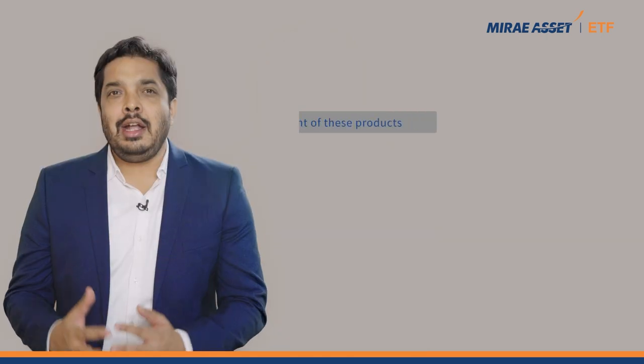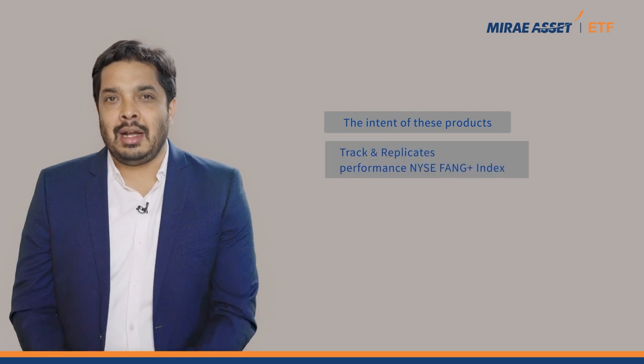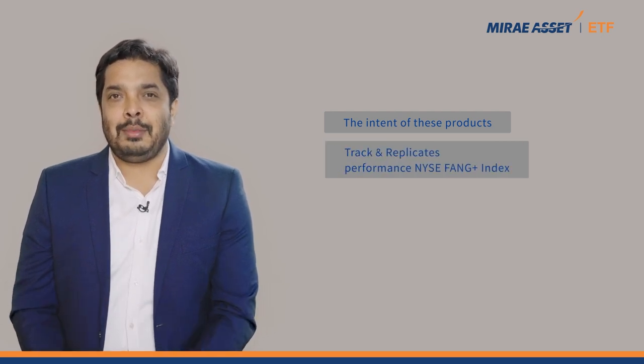Hello there, hope all of you are doing well. In this video I'll be talking about Mirai Asset NYSE FANG Plus ETF and Mirai Asset NYSE FANG Plus ETF Fund of Fund. The intent of these products is to track or replicate the performance of NYSE FANG Plus Index. The ETF invests in the underlying stocks forming part of the index and it can be bought or sold on stock exchange or in multiples of lot size from the asset management company directly. The Fund of Fund on the other hand invests in the ETF itself; an investor can subscribe or redeem like a normal mutual fund, lump sum or in a staggered manner.